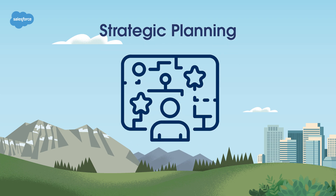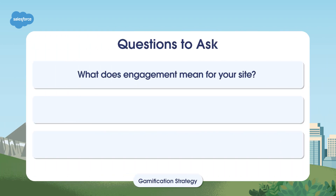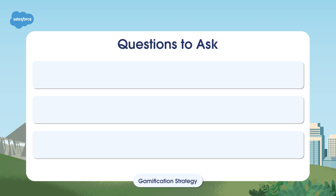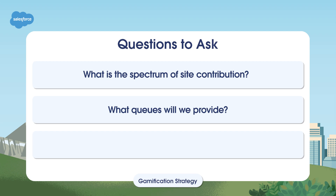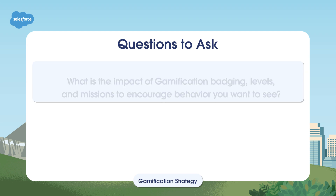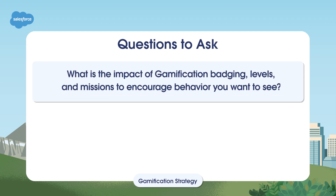Before you get started with gamification, it's important that you develop a gamification strategy. Here are a few questions to ask: What does engagement mean for your site? What is the user journey? Gamification and user journeys go hand in hand. What types of site contributions are the most important? What is the spectrum of site contribution — for example, users might be answering questions, posting questions, liking comments or posts, or tagging other users. What cues will we provide? Moderators can help prompt questions or posts to promote engagement. What content is most relevant to guide people to? Once you've thought about your goals, think through how you might use the default functionality of badging, levels, and missions to encourage the behavior you want to see.